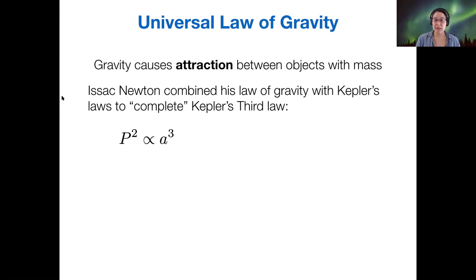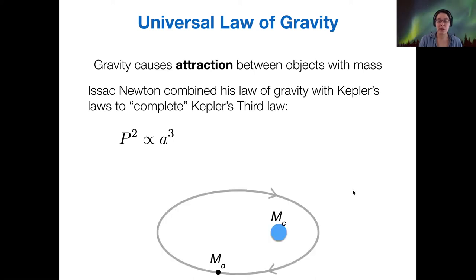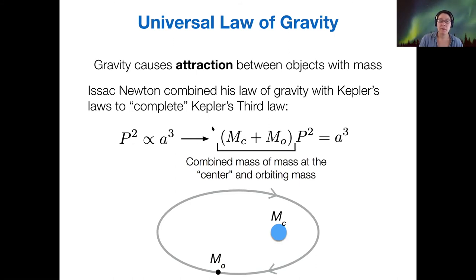Newton combined his law of gravity with Kepler's laws and took Kepler's third law from a proportionality relationship to a real life equation. The idea is that you have two masses: one is MO, the mass of our object, and the other mass is MC, the mass at the center of the orbit. If we use Newton's laws together with Kepler's third law, then this proportionality relationship is replaced by an exact measure of the combined mass of those two objects. Now, instead of having this being only good for our solar system, we can extend Kepler's third law and consider any object orbiting anything with some central mass.